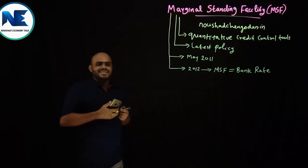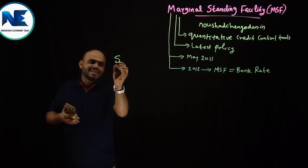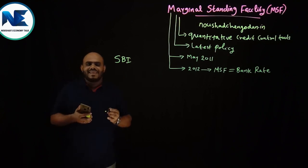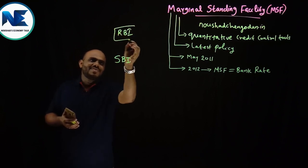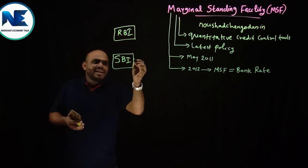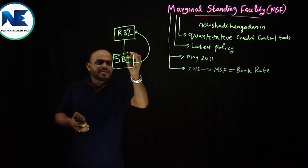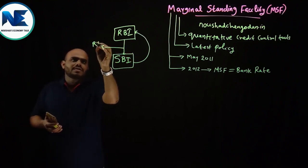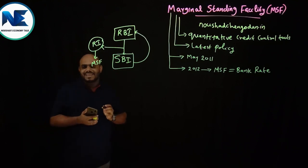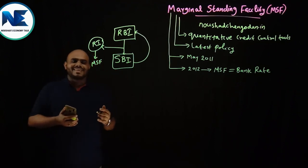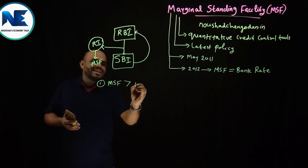What do we understand from that definition? Commercial banks — let's take SBI — can take a loan from RBI at the apex level. RBI will charge a rate of interest, and this rate of interest is known as MSF rate. There are two additional features: first, the MSF rate will be greater than the Repo Rate. For example, if Repo Rate is 6%, MSF will be greater than that.